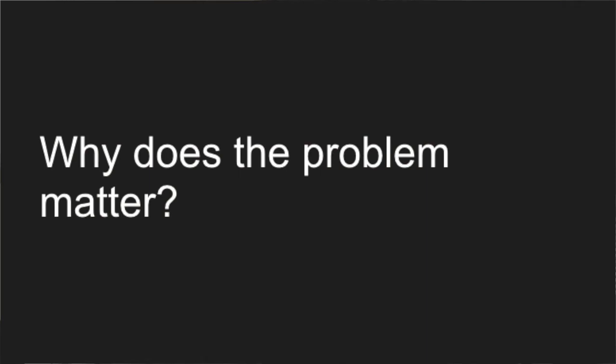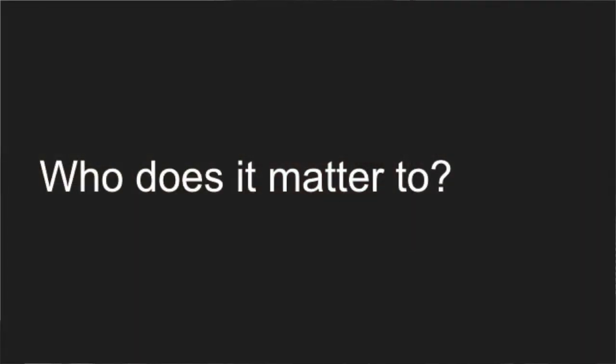The second question is: why does that problem matter? We think it's very important to ask this, because many things are going wrong in the world at any given time, and we want organizations to be clear that they've chosen to address them because they're consequential. For each person, we want them to identify why it matters and reflect on what data they'd use to measure the effect they're most concerned about. Then we ask: who does it matter to? In this question, they start to identify all the different interest groups and stakeholder groups — all the people who really need to be at the table. We then use that information in a second step to expand the process.